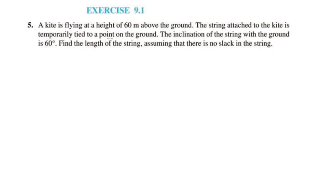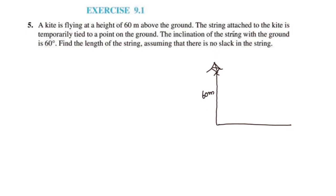A kite is flying at a height of 60 meters above the ground. This kite is flying at a height of 60 meters above the ground. The string attached to the kite is temporarily tied to a point on the ground. The inclination of the string with the ground is 60 degrees.